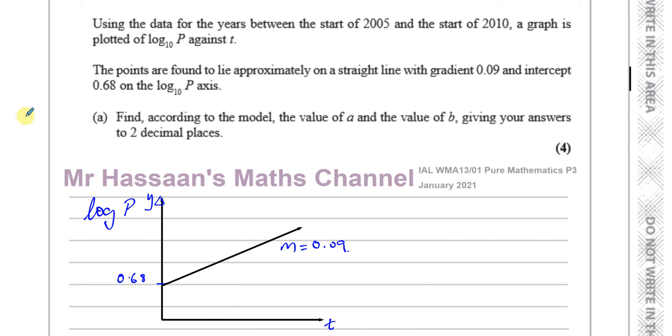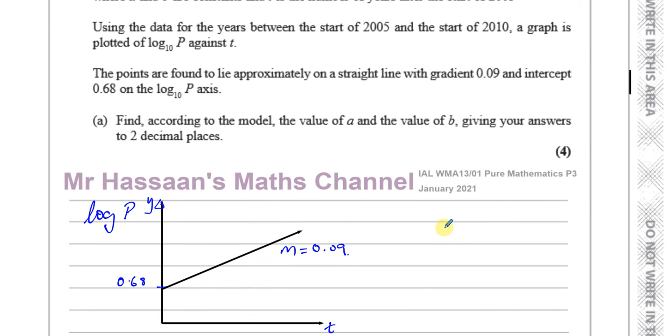So we started off with this equation which is P equals AB to the power of T, and we ended up with a log P here. So what I'm going to do is take the log to the base 10 of both sides. So I'll say log P equals log AB to the power of T.